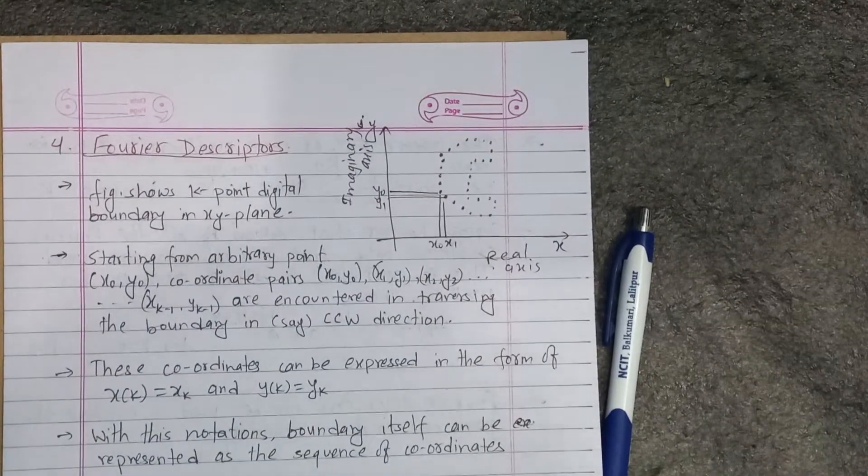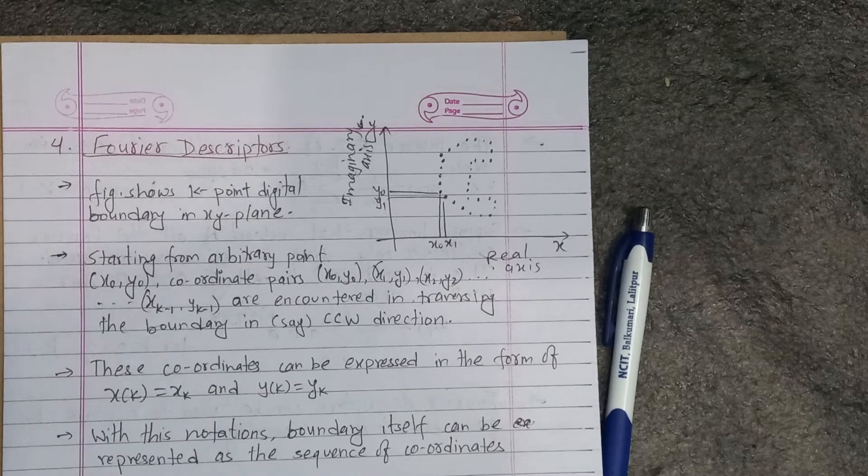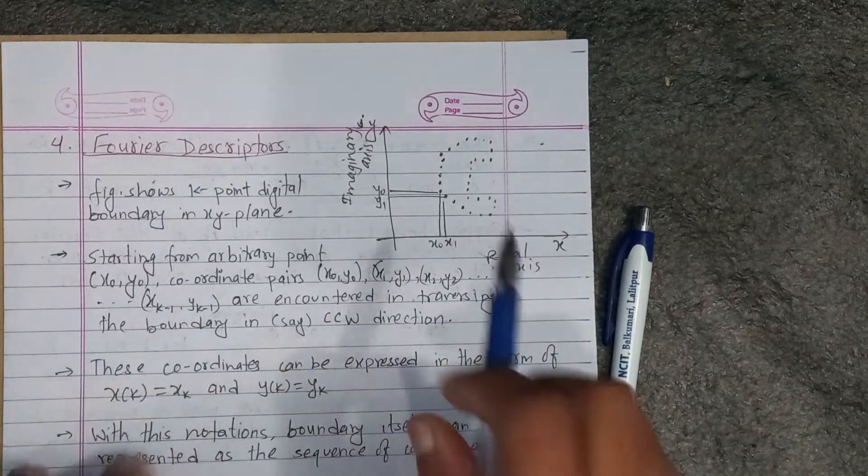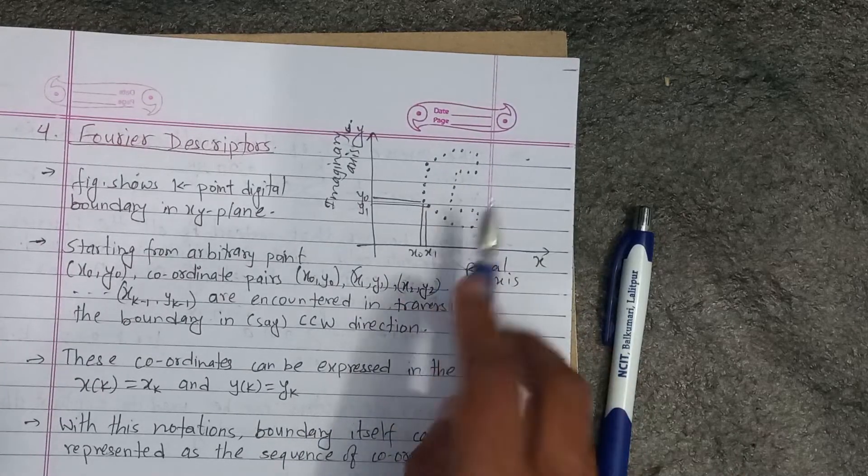Okay, so this is the first concept of Fourier descriptor. This is a very good idea. What are we doing? We have made a figure, we have made a point, we have made a boundary matrix.